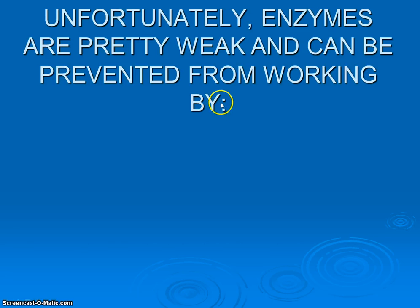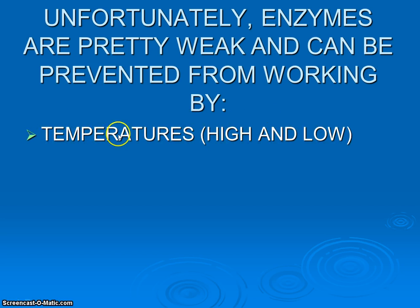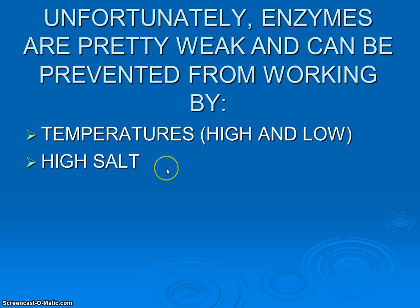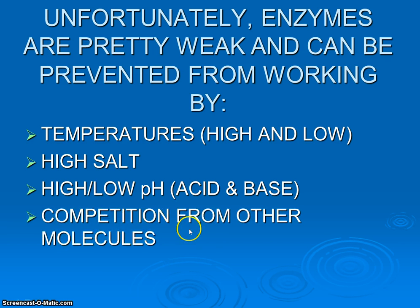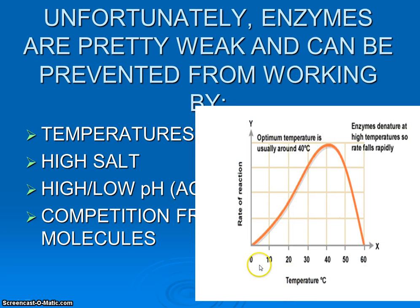There's always a problem though — enzymes are pretty weak. They're super important, super amazing, and super effective, but they can be prevented from working very easily by environmental factors. Temperature can alter and affect enzymes. Salt and ion concentrations — if there's too much or too little salt, that can affect them. Acids and bases — if we start changing the pH, that alters things. Remember homeostasis: we don't want these things to change, we want to maintain a constant internal environment. Other molecules can also stop enzymes from working.